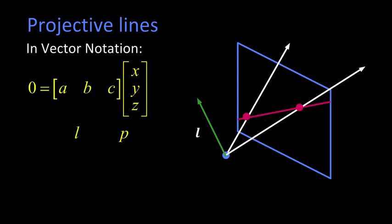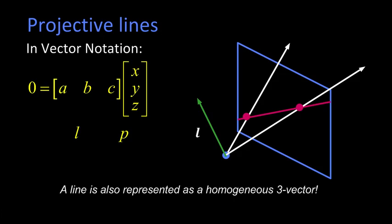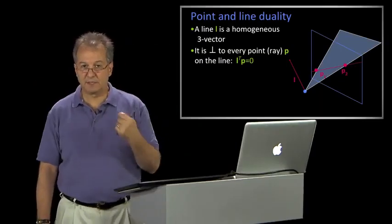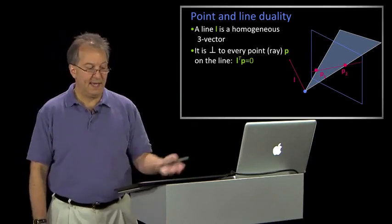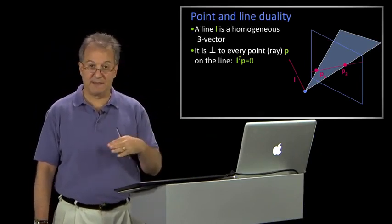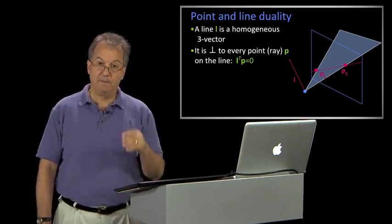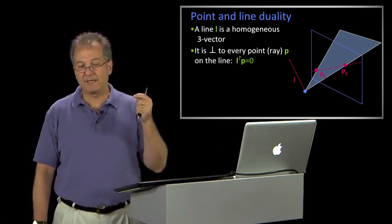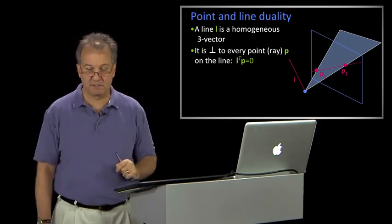We can write this very simply in vector notation, essentially L transpose P. The thing to think about is that in projective geometry and in this homogeneous coordinate system, a line is also a homogeneous three-vector. A point is a homogeneous three-vector, but a line is also a homogeneous three-vector. This relationship - that a point is a three-vector and a line is a three-vector - is what's going to get to this duality between points and lines. A line is a homogeneous three-vector defined by that normal to the plane, and it is perpendicular to every point P that's on that plane. Being perpendicular to a point means you're actually perpendicular to the ray that defines that point. That's what gives us some of that duality.